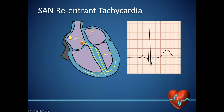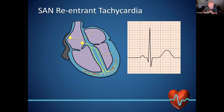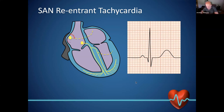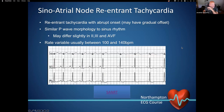We end up with a re-entrant tachycardia around the SA node, which then goes down the AV node using the His-Purkinje system, so we end up with a narrow complex that looks identical to sinus rhythm. The only difference is that sometimes the P wave morphology can be slightly different. Bachmann's bundle is still working, going across to the left atrium. The P wave is just very subtly different — about the same as a glass of Sauvignon Blanc versus the original. Generally this shouldn't have an impact on device therapy.